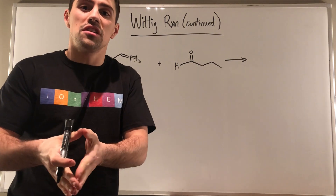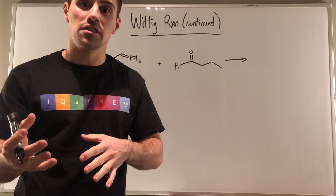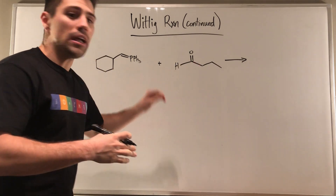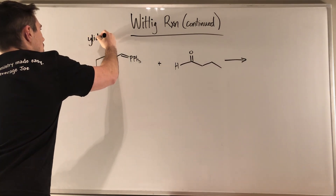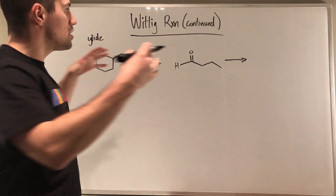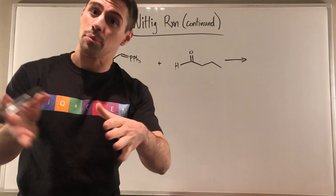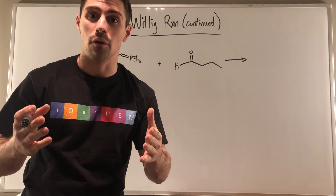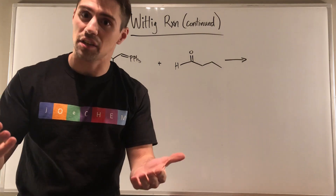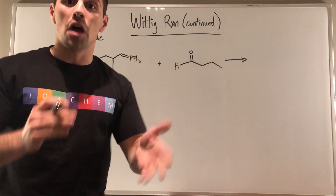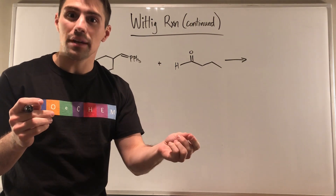In a previous video, we were introduced to the Wittig reaction. We know it's a way for us to have a carbonyl and something we call a ylide. And if we smush those two together, we can produce alkenes. In the previous video, we talked about alkenes that resulted in Z double bonds, or in a lot of cases they were also cis. So there's actually a small caveat with Wittig reactions.